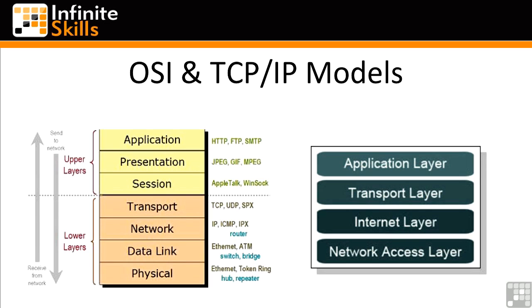Starting from the bottom, we have the physical layer, which is where all of the physical stuff lives — the wires and cables and network interfaces and hubs and repeaters and switches and that sort of thing. Sitting above that is the data link layer, and that's where the Ethernet protocol, ATM protocol, and frame relay — those sorts of things — live.